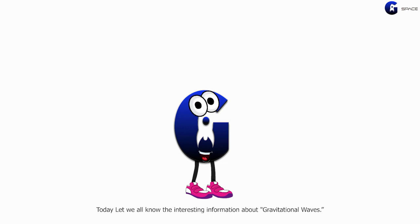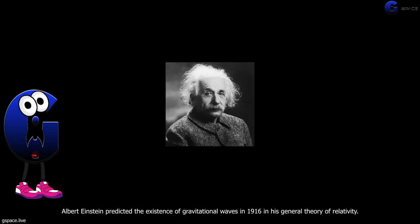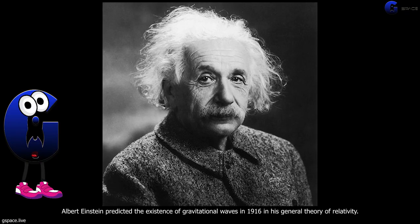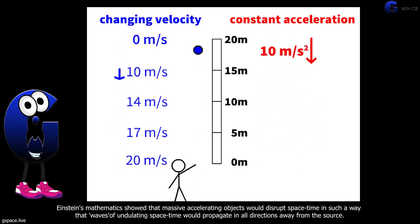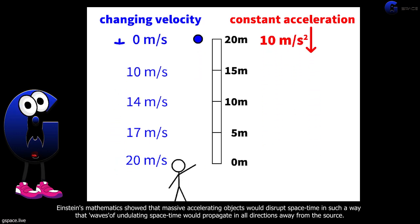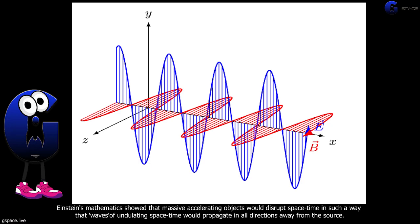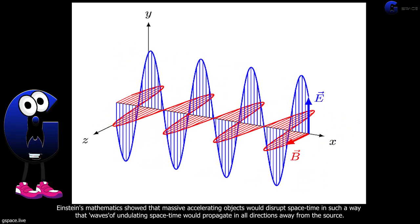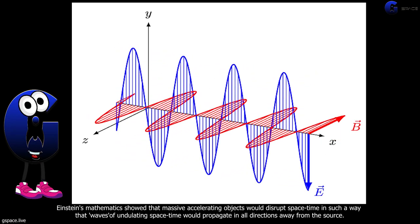Gravitational waves are ripples in space-time caused by some of the most violent and energetic processes in the universe. Albert Einstein predicted the existence of gravitational waves in 1916 in his general theory of relativity. Einstein's mathematics showed that massive accelerating objects would disrupt space-time in such a way that waves of undulating space-time would propagate in all directions away from the source.